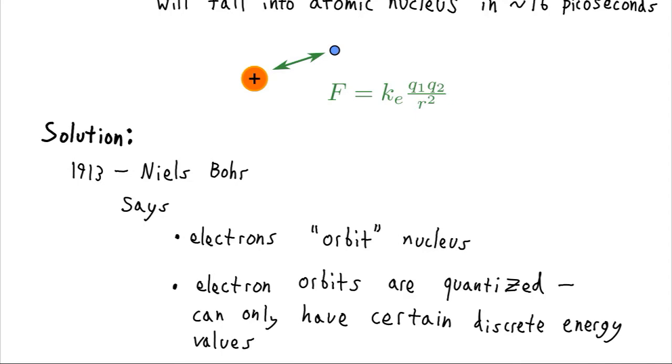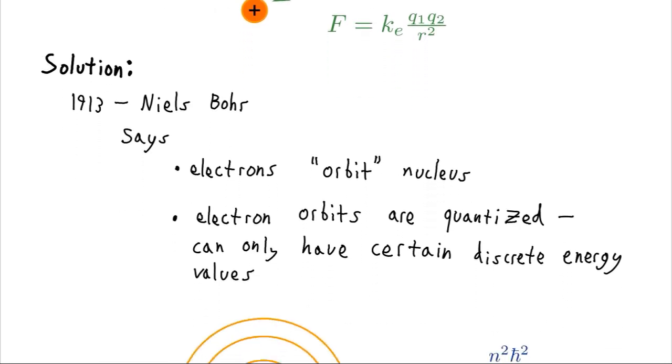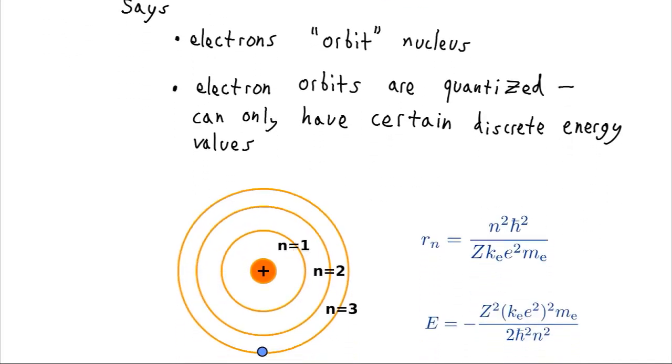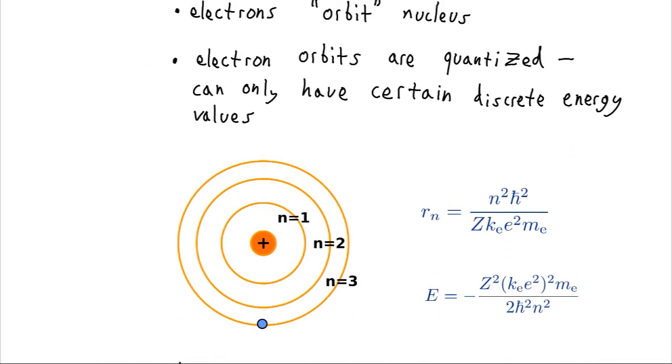So that's the same thing that Planck did in order to solve the ultraviolet catastrophe. He quantized light. So according to Niels Bohr there are certain radiuses at which we can have our orbits and they're given by this formula.